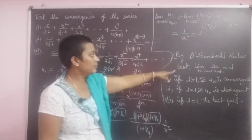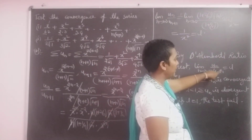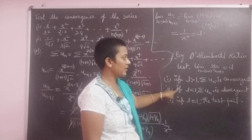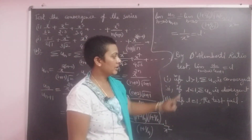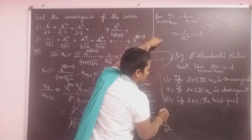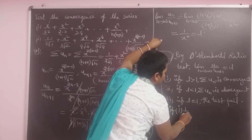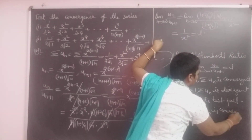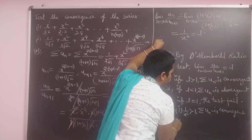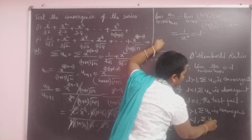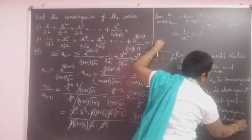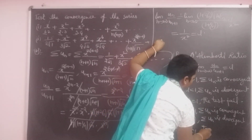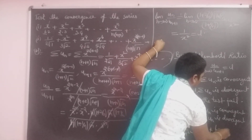By D'Alembert's ratio test, L = 1/x². First case: if 1/x² > 1, then Σuₙ is convergent. Second case: if 1/x² < 1, then Σuₙ is divergent. Third case: if 1/x² = 1, the test fails to decide the nature of convergence or divergence.